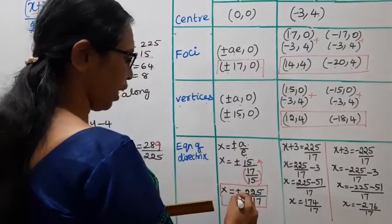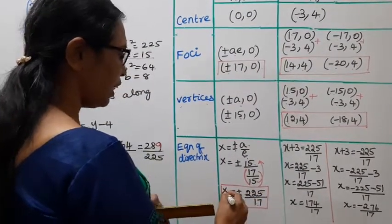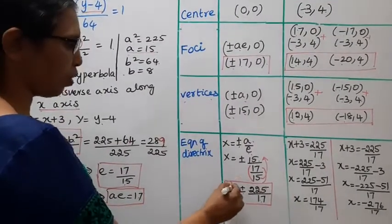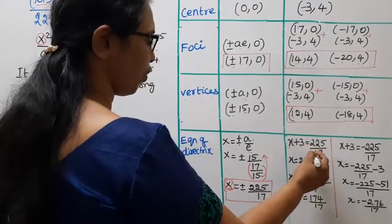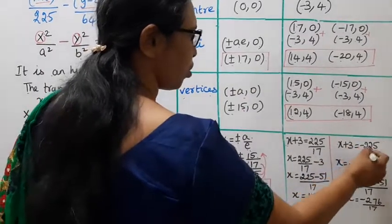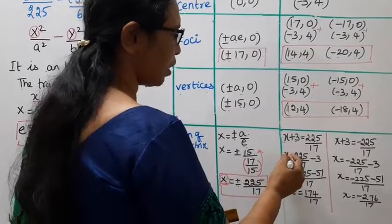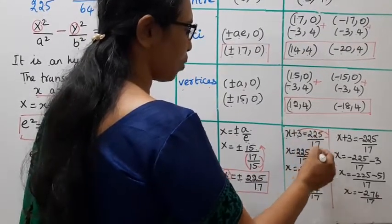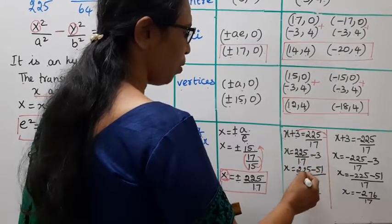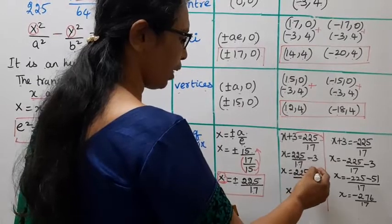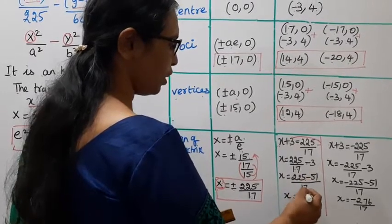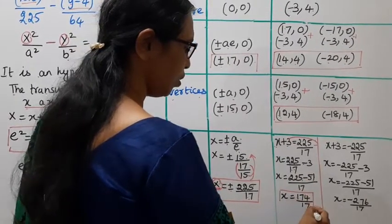For the directrices, X = ±225/17. Replacing X with x+3: x+3 = +225/17, so x = 225/17 - 3 = 225/17 - 51/17 = 174/17. So the first directrix is x = 174/17.